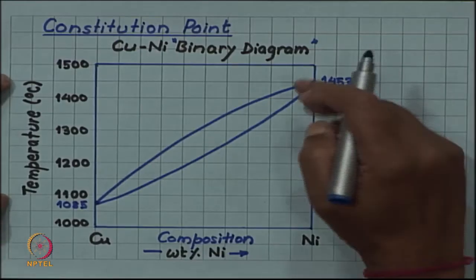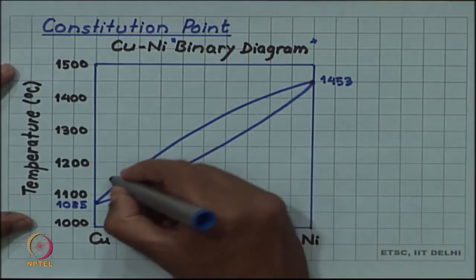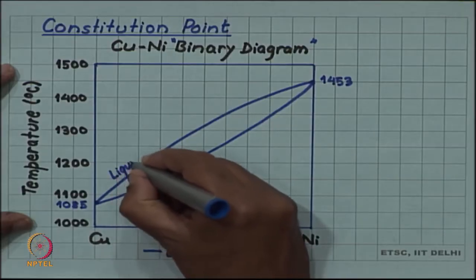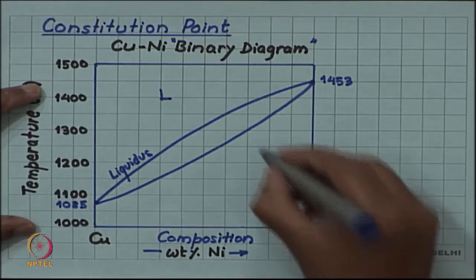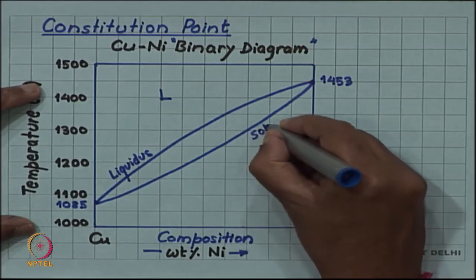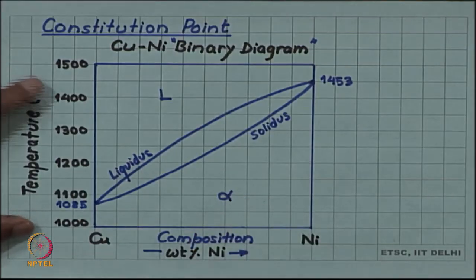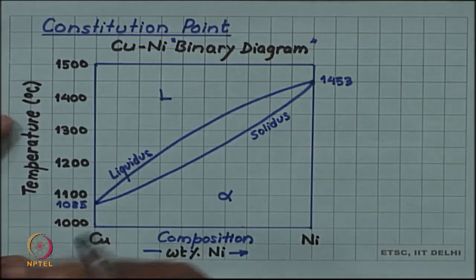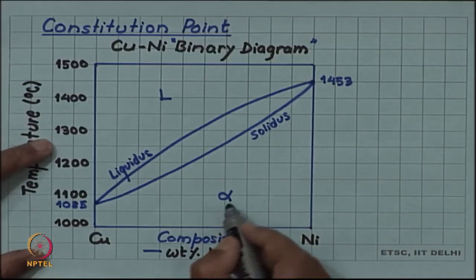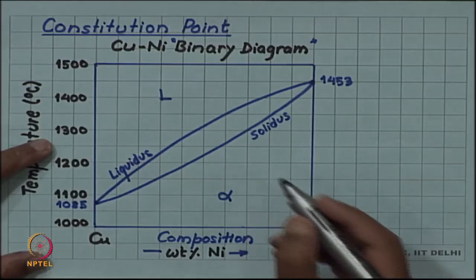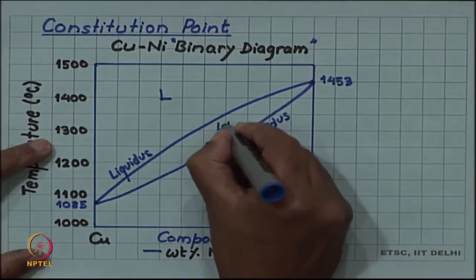The copper-nickel phase diagram is a very simple phase diagram where there are two boundaries. The upper boundary is the liquidus boundary, and above that we have a liquid phase in equilibrium. The lower boundary is the solidus boundary, and below this a solid solution phase is stable. I have written alpha for this particular solid phase, and in between the two boundaries we have a two-phase region: liquid plus alpha.